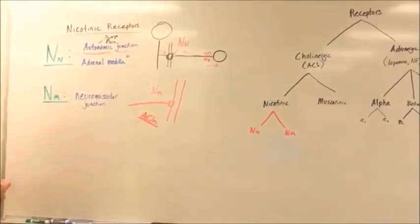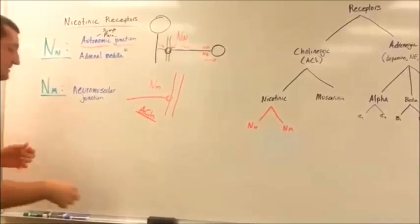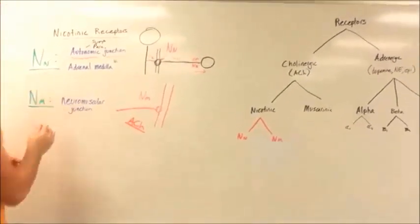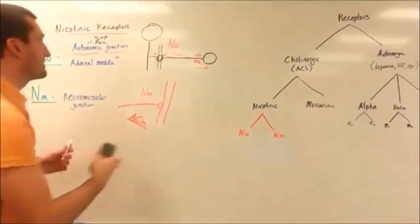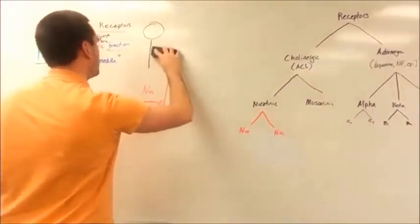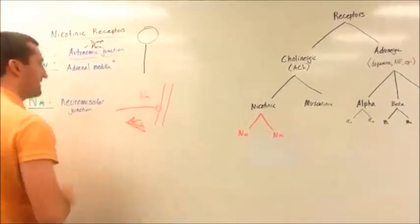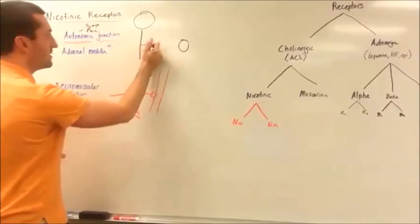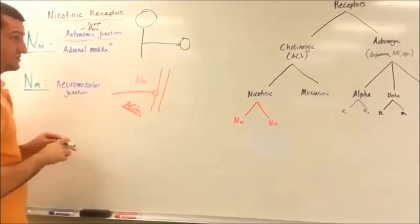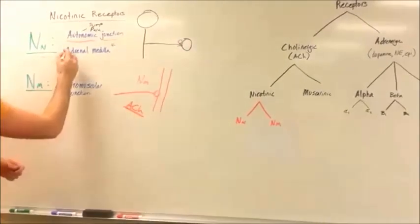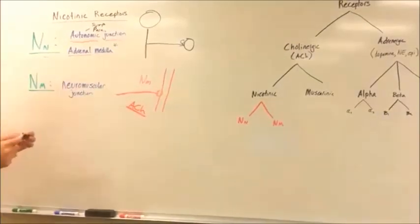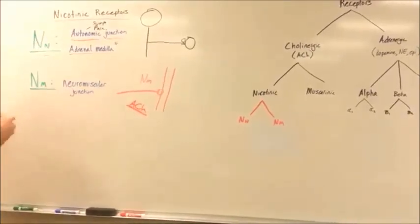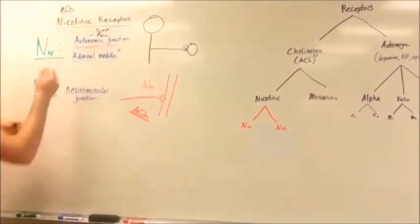And then finally, the adrenal medulla. This is going to be one of the few times where a pre-sympathetic nerve is going to directly innervate an organ, and specifically it's going to be an N-sub-N receptor. The nerve goes from the spinal cord directly to the adrenal gland. This is one of the few times that you're going to get a sympathetic effect due to a nicotinic, acetylcholine neurotransmitter.